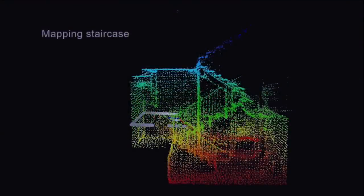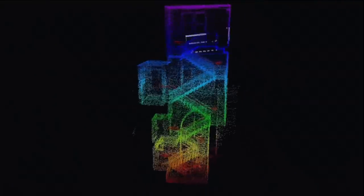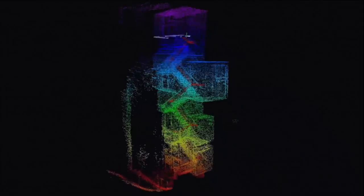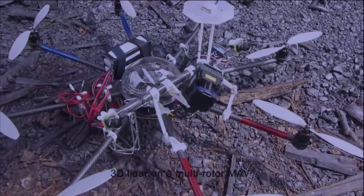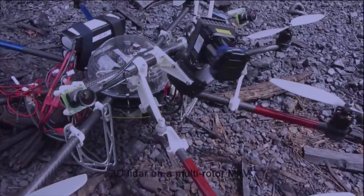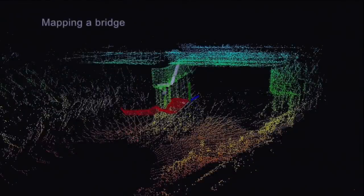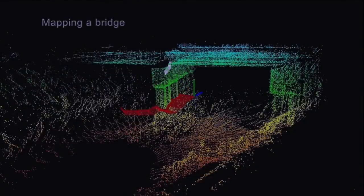Here we're showing results of mapping a staircase. We use IMU to compensate for the nonlinear motion. And the proposed method only deals with linear part of the motion. We also test on a flying small helicopter. We fly there around a small bridge. And in the end, we were able to build a point cloud map of the bridge.